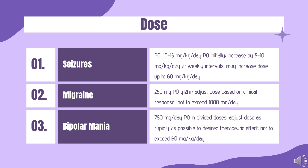PO: 10–15 mg/kg/day initially, increased by 5–10 mg/kg/day at weekly intervals, base dose up to 60 mg/kg/day.